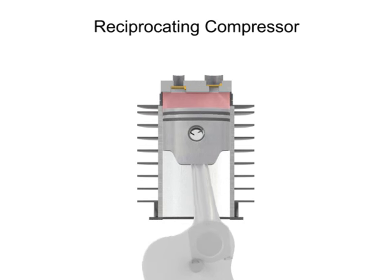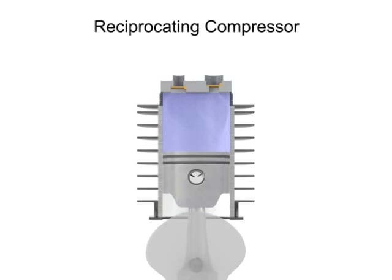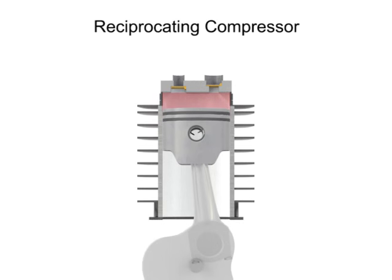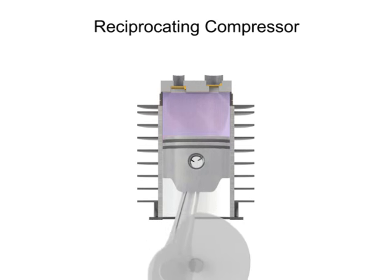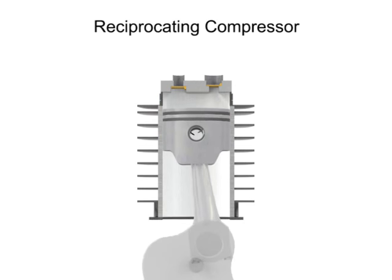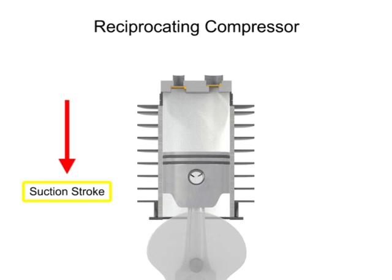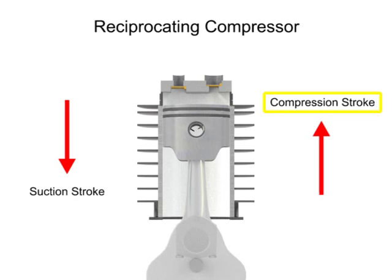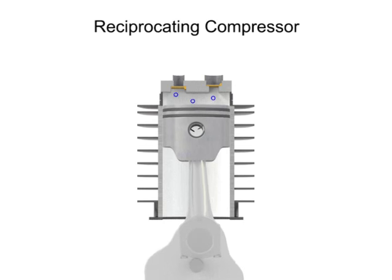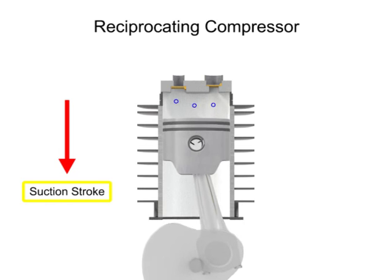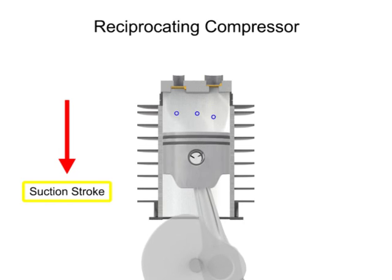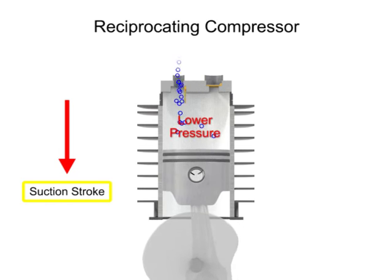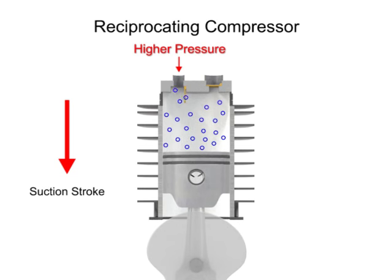As the crankshaft turns, the piston lowers and raises, changing the available volume within the cylinder. The downward stroke of the piston is called the suction stroke. As the piston moves downward, the volume increases within the cylinder. As the volume increases, the pressure within the cylinder becomes lower than the inlet air pressure, allowing the higher pressure outside air to push open the inlet valve and allow more air into the cylinder.